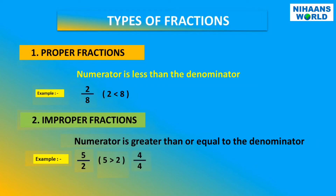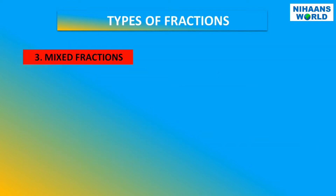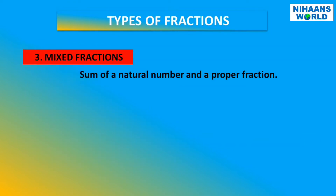Four is equal to four, thus we say that four upon four is an improper fraction. Mixed fractions: a mixed number is the sum of a natural number and a proper fraction. For example, two and a half represents a mixed number.